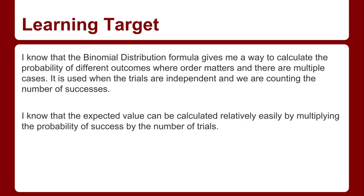The binomial distribution is used when the trials are independent and we are counting the number of successes. We'll focus on that more in two lessons from now when we compare it with the hypergeometric distribution. Also, I know the expected value can be calculated relatively easily by multiplying the probability of success by the number of trials — we'll see that second formula shortly.